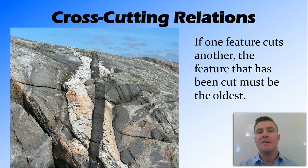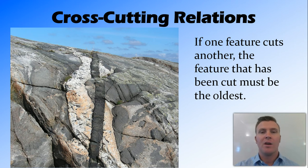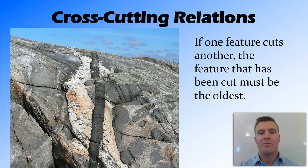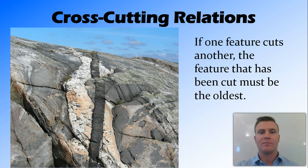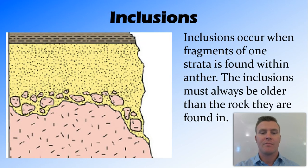The rule of cross-cutting relations states that if one feature cuts another, the feature that has been cut must be the oldest. Here you can see the main strata of lighter gray rock has been cut by a white rock running through it, which has then been cut again by a dark gray rock. This tells us the dark gray rock formed after the white rock, which formed after the lighter gray rock.